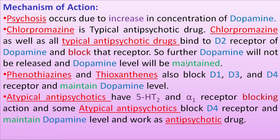Rather than just the D2 receptor, phenothiazines and thioxanthines also block D1, D3, and D4 receptors, inhibiting the release of dopamine and maintaining dopamine levels. Atypical antipsychotics have 5-HT2 and alpha-1 receptor blocking action; some also block D4 receptors. By blocking 5-HT2, alpha-1, and D4 receptors, they maintain dopamine levels and work as antipsychotic drugs.